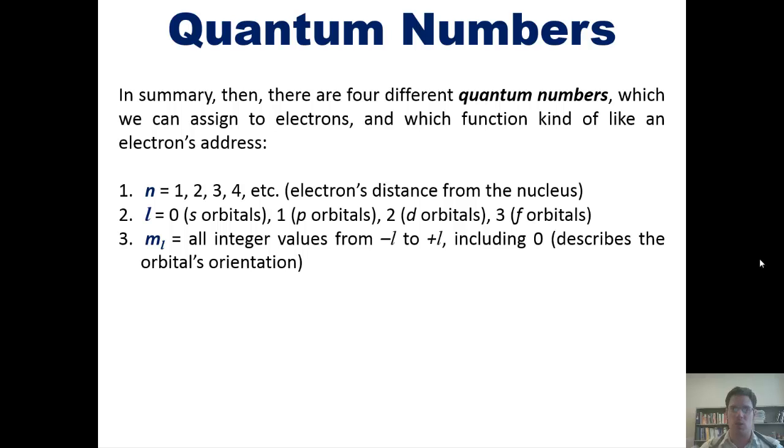or minus one. Each of those three numbers, plus one, zero, and minus one, corresponds to a different orientation of a p orbital around the nucleus, one straddling the x-axis, one straddling the y-axis, and another straddling the z-axis. What if you have an azimuthal or L number of zero?